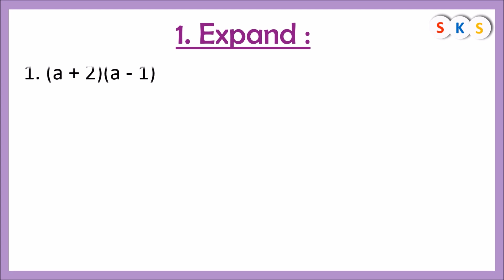Now the first question: expand (a + 2)(a − 1). You can see the first term of both brackets is the same. When the first term of both binomials is the same, we use the formula (x + a)(x + b) = x² + (a + b)x + ab. The second binomial is in negative form, so we convert it to addition form: a + (−1).